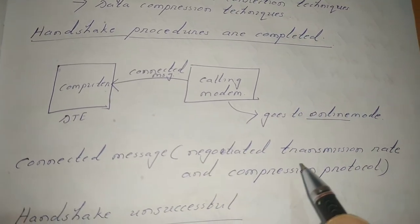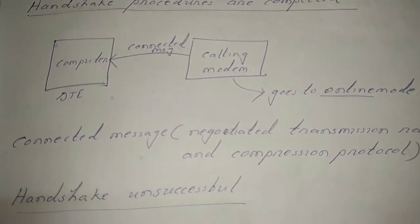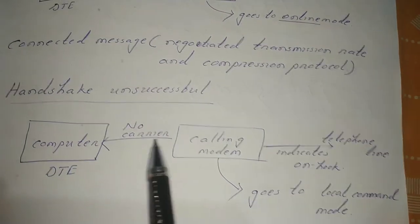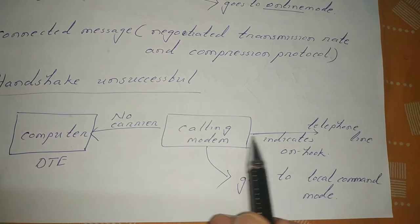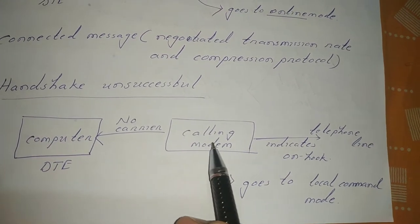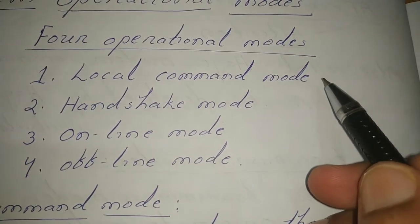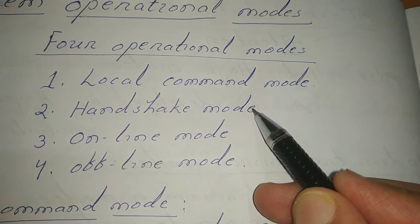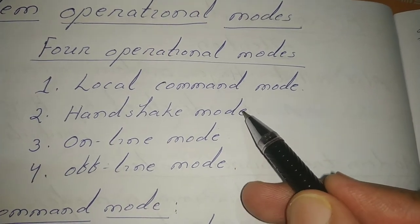The connected message contains the negotiated transmission rate and compression protocol. However, if the handshake procedure is unsuccessful, the calling modem sends a 'no carrier' message to the DTE or computer, and sends an on-hook command to the telephone line. The calling modem then goes back to local command mode. So the sequence is: local command mode → handshake mode → online mode (if successful), or back to local command mode if the handshake fails.